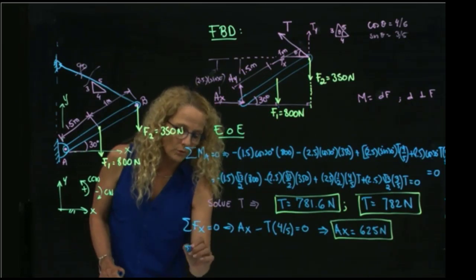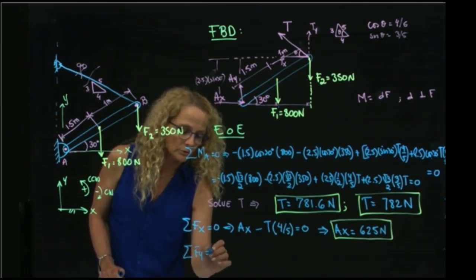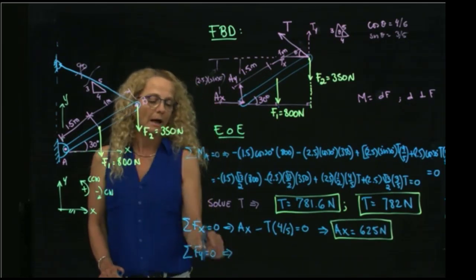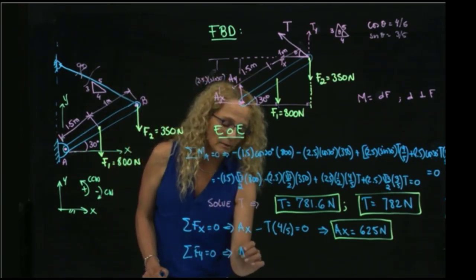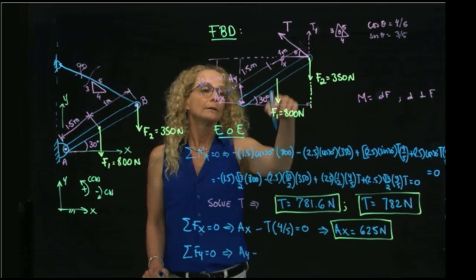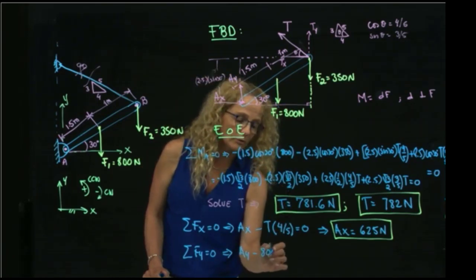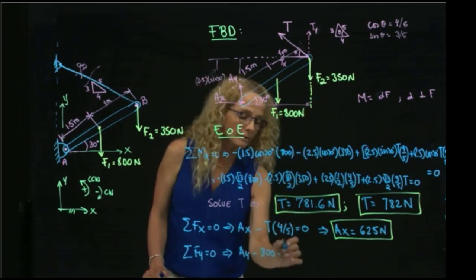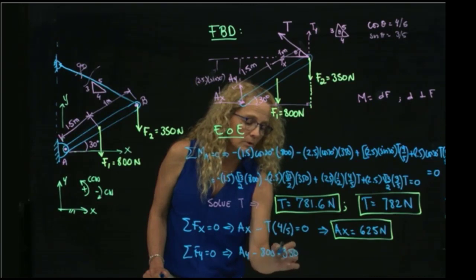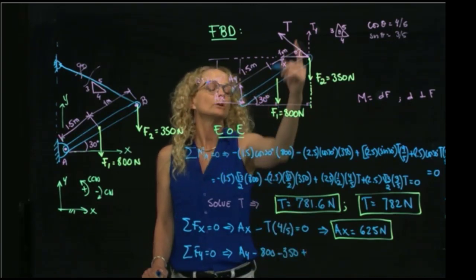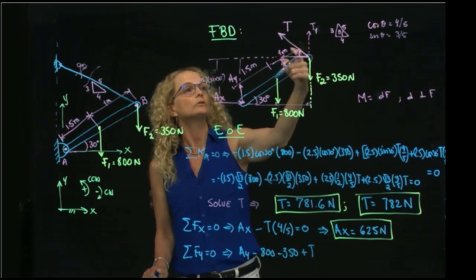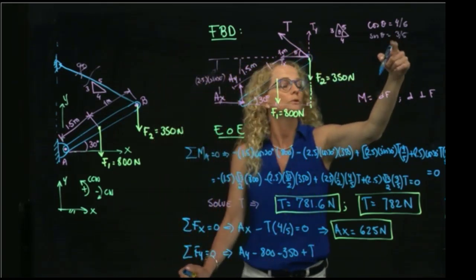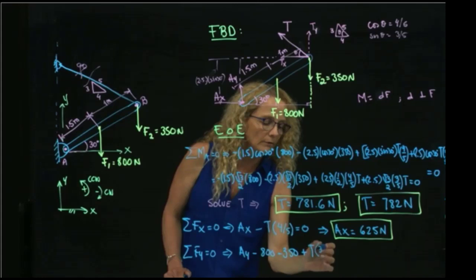And I solve my last equation, which is adding forces in y, will give me Ay minus this active force, minus this active force, plus the tension in y. And we say that the tension in y is the tension times sine of this angle, which is 3 over 5. This is equal to 0.